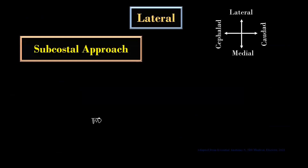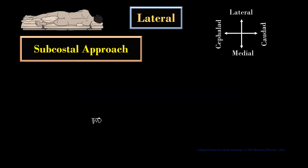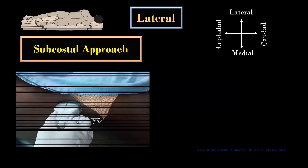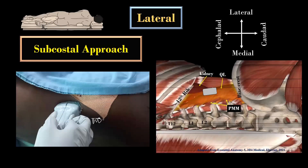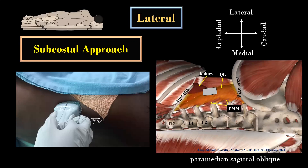This block is usually performed with the patient in lateral decubitus position. The transducer is placed between the lower costal margin and the iliac crest, posterior to the posterior axillary line or near the scapular line. The probe is usually kept 6-8 cm lateral to the spinous process of L1 or L2.